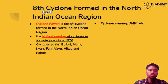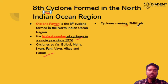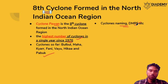The 8th cyclone is Pavan, which occurred in the North Indian Ocean. As mentioned, after 1976 this is the highest number of cyclones we are seeing. The cyclones so far are Bulbul, Maha, Kiar, Fani, Vayu, Hika, and Pavan. Please look at the cyclone naming convention. Also note that the Disaster Management Relief Fund comes under the public account under the Disaster Management Act.